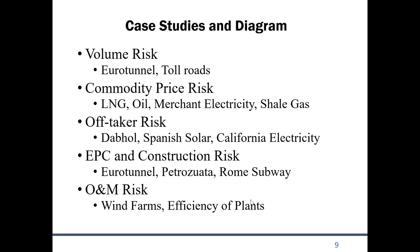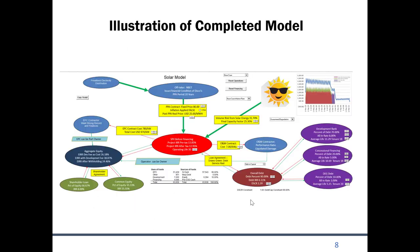A very famous project in India built by Enron - considered a wonderful company at the time - charged a very high price and the off-taker simply said it won't pay. A similar story with Spanish solar projects. Don't think off-taker risk or political risk only occurs in countries you might think aren't quite so rich. There are also EPC contract problems with cost overruns, construction delays like the Rome subway, and O&M risk.